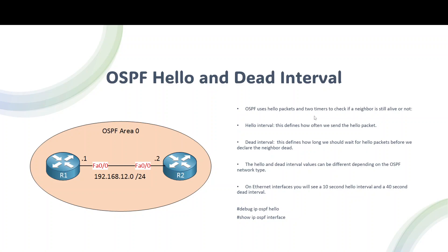The Hello interval determines how often we send hello packets, so we know our neighbor is reachable. The Dead interval is four times the Hello interval. If there is no reply within the Dead interval, the router decides the neighbor is down and removes it from the neighborhood.